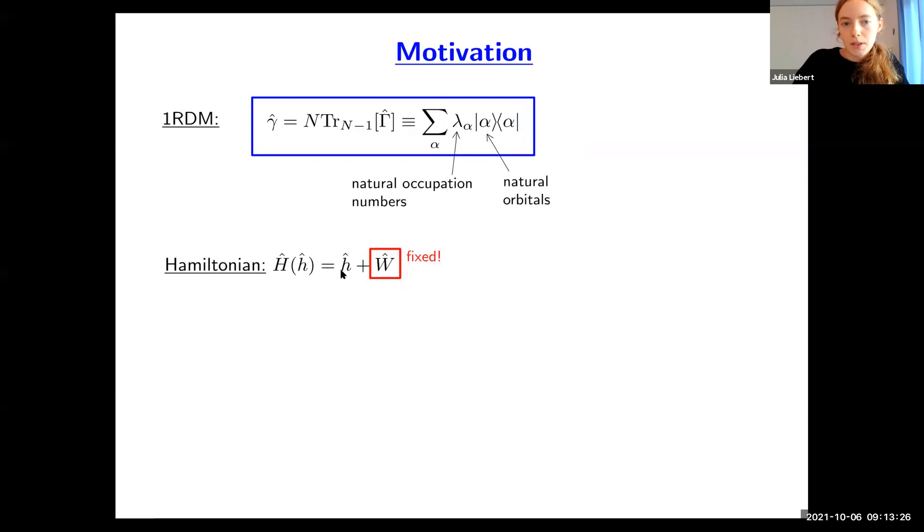Now we look at the Hamiltonian, which consists of two terms: a one-particle Hamiltonian h and an interaction term. We can make two observations. First, the one-particle Hamiltonian and the one-RDM are conjugate variables, meaning knowledge of the one-RDM is sufficient to calculate the expectation value of any one-particle Hamiltonian. Second, we usually deal with fixed interaction, like Coulomb interaction for electrons or effective hardcore interactions for ultracold quantum gases. We keep this interaction fixed, which allows us to parametrize our total Hamiltonian by the one-particle Hamiltonian.